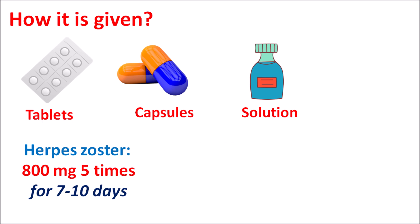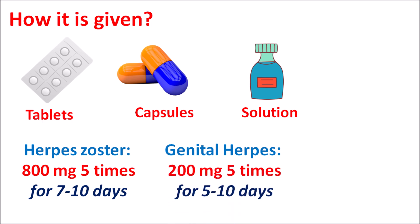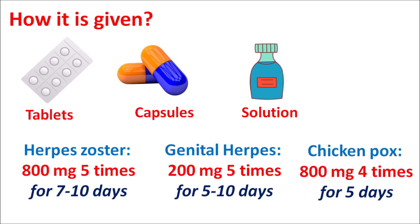For the treatment of genital herpes infections, it can be given at a dose of 200 mg five times daily for five to ten days. For the treatment of chickenpox, this drug is given at a dose of 800 mg four times daily for five days. In the treatment of chickenpox, early treatment with acyclovir gives positive results.